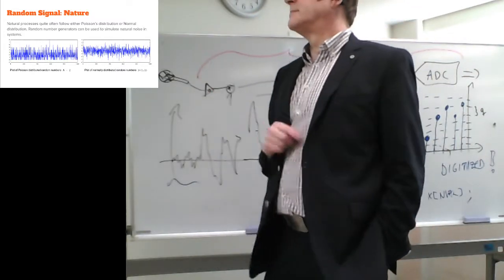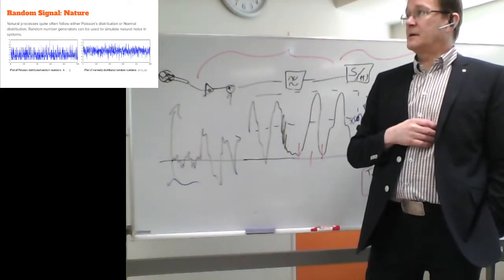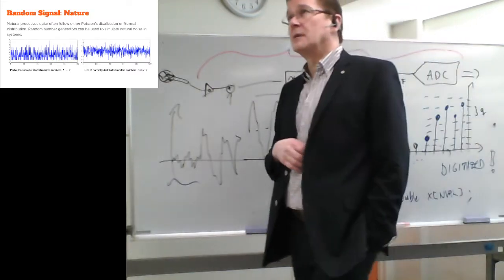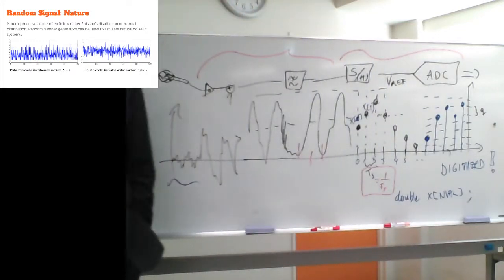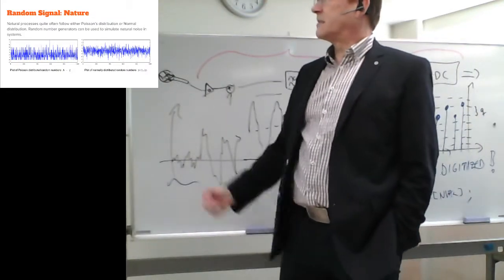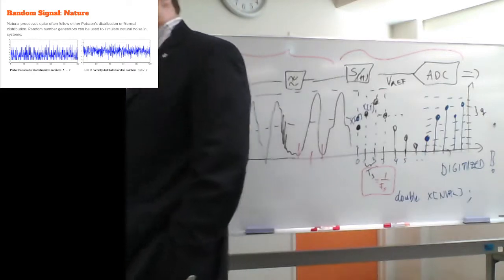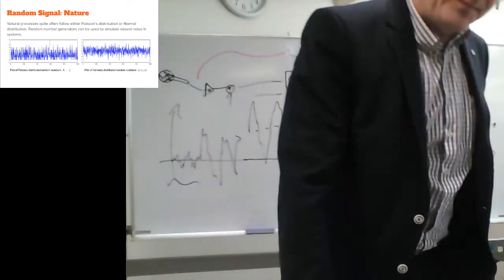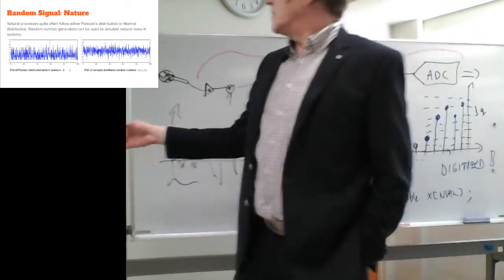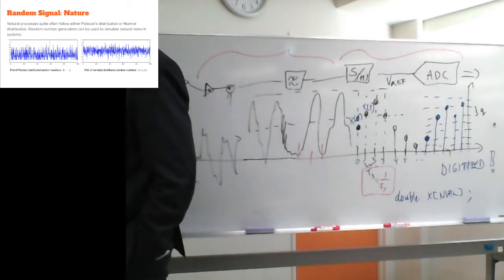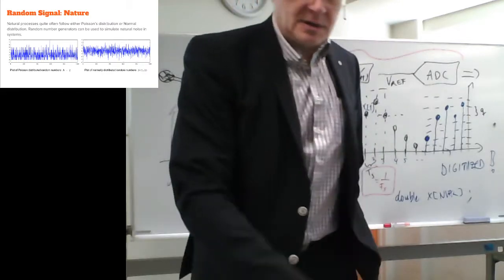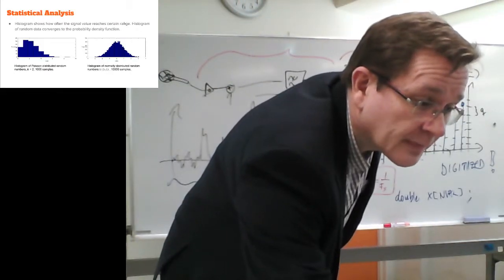At atomic or nuclear levels, noise typically follows a Poisson distribution — like rolling dice. However, with higher numbers almost anything follows the normal distribution, which is what we'll use in our experiments for random numbers. Natural noise more or less follows a normal distribution.